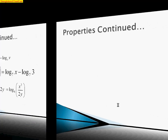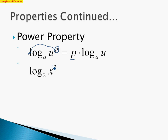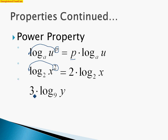Our last property is the power property, which says if we have log base a of some expression to a power, that power can come all the way down in front as p times the log base a of u. For a quick example, log base 2 of x squared — the 2 is the exponent, so it comes down in front giving us 2 log base 2 of x. Going the other way condensing, a 3 in front goes up as an exponent, giving us log base 9 of y cubed.